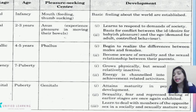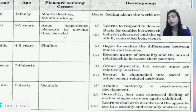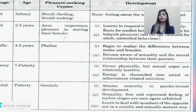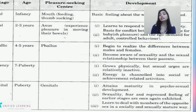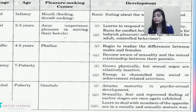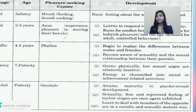The phallic stage occurs between four and five years of age, with the phallus as the pleasure-seeking center. The child begins to realize the difference between males and females, becomes aware of sexuality, and of the sexual relationship between their parents. The phallic stage also involves two complexes: the Oedipus complex and the Electra complex.